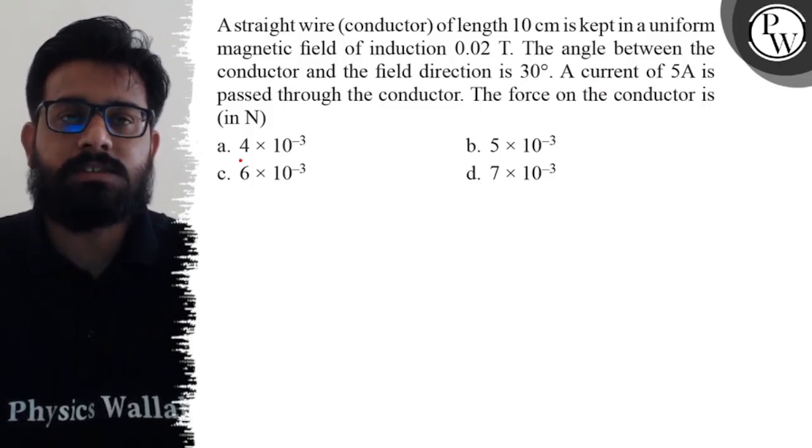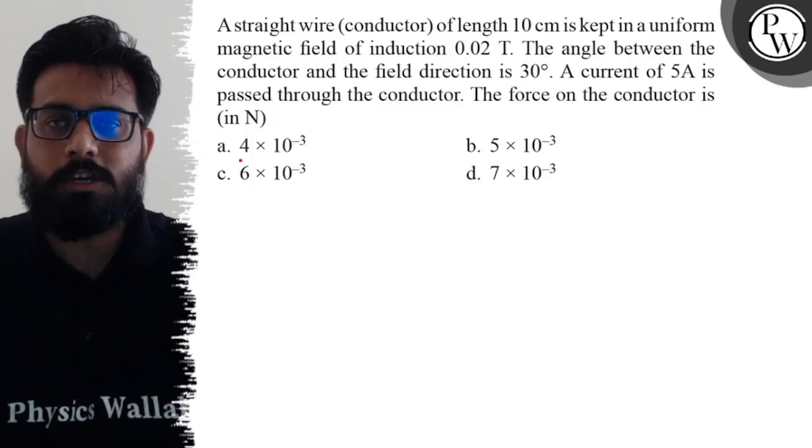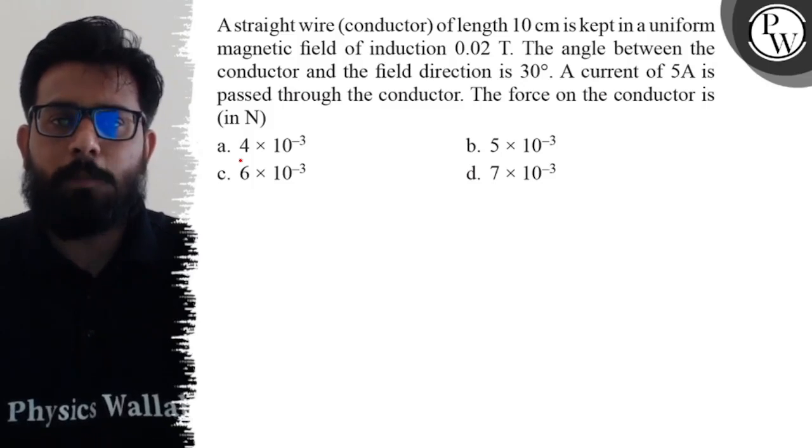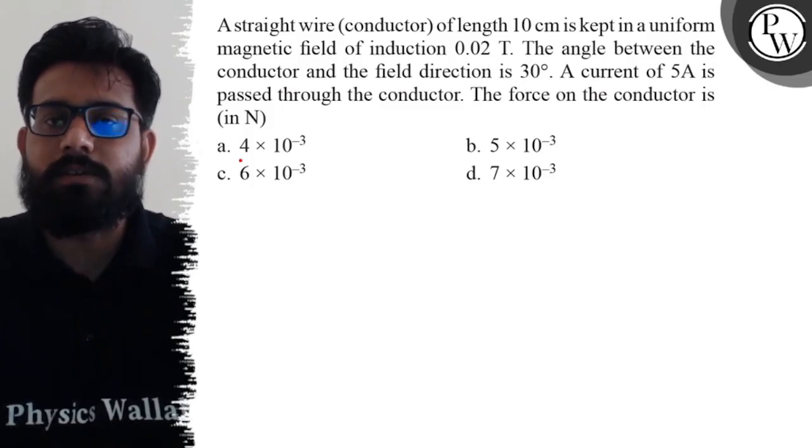The force on the conductor is - your first option is 4 into 10 raised to the power minus 3, second option is 5 into 10 raised to the power minus 3, third option is 6 into 10 raised to the power minus 3, and fourth option is 7 into 10 raised to the power minus 3.